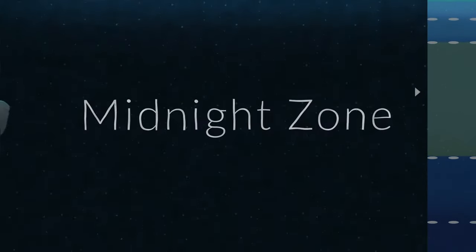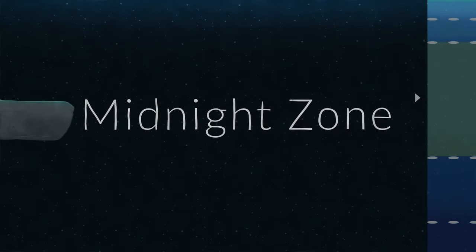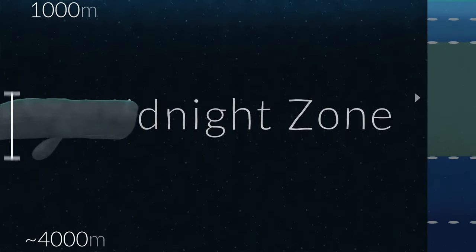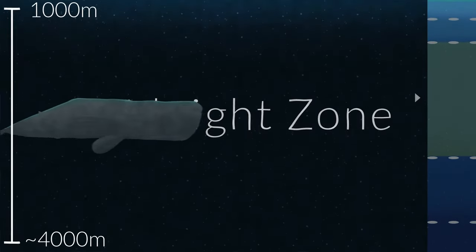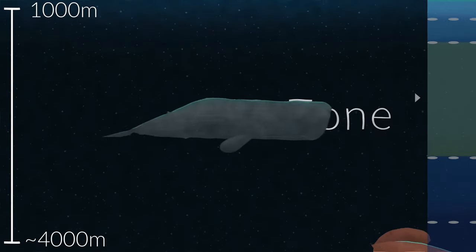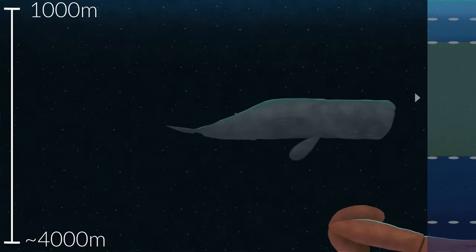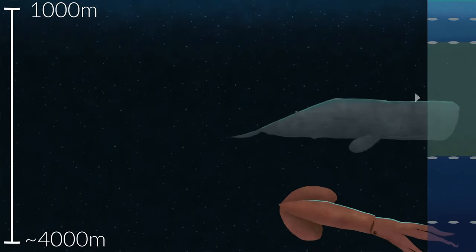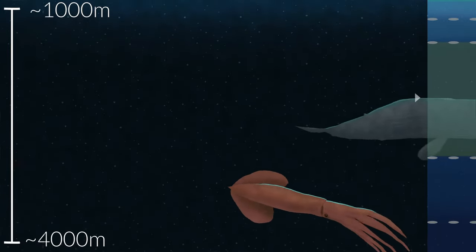Next is the midnight zone, which is dark and cold. Encompassing about 70% of our ocean, this is the largest habitat on our planet, and home to giants like sperm whales and colossal squid.